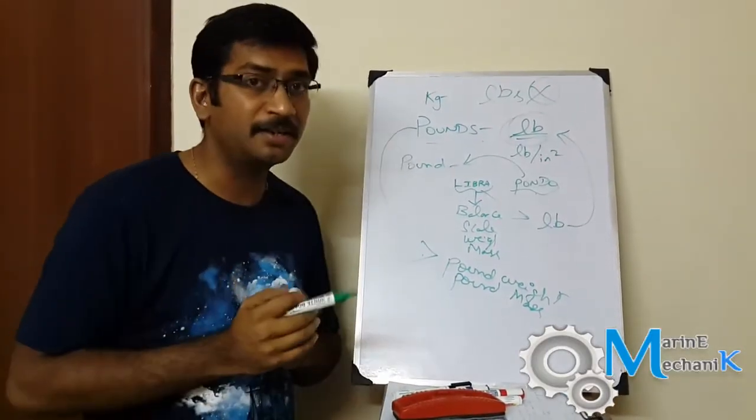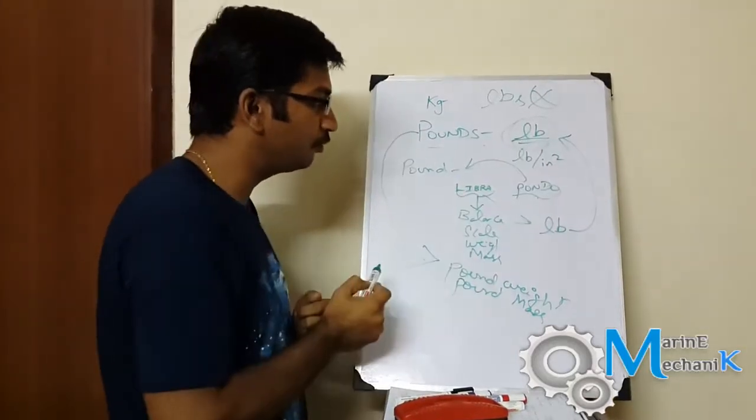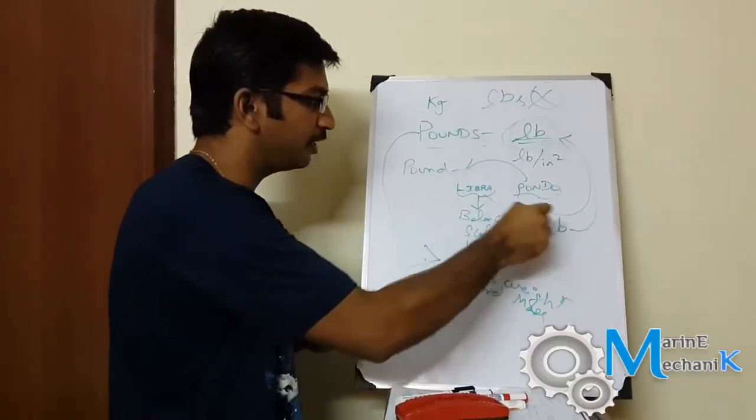So I think now you all know why LB is used. Once again, I'll explain it: it is LIBRA and PONDO. LIBRA is transferred as LB, and PONDO is referred to as pound.